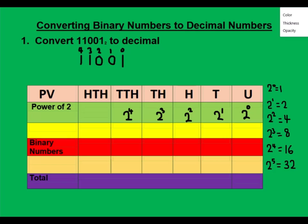To help us, I've listed out some numbers. Two to the power zero is one. Two to the power one is two. Two to the power two is four. Two to the power three is eight. Two to the power four is 16. Two to the power five is 32, and so on. So the values here give us one, two, four, eight, and 16.